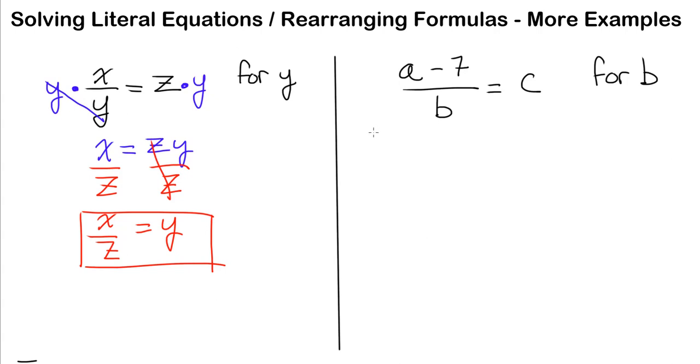In our next example, we have the equation a minus seven over b equals c, and we need to solve for b. This is similar to the first example. In order to solve for b, I need to get b out of this fraction. We undo fractions by multiplication because we're undoing the division. So I need to multiply both sides by the denominator, which is b. b divided by b cancels out, leaving me with a minus seven on the left, and c times b is cb.